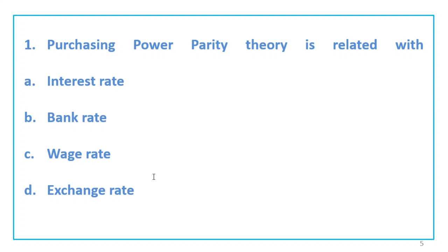First question: Purchasing Power Parity theory is related with which of the following options — interest rate, bank rate, wage rate, or exchange rate? Option D is the right answer: exchange rate.